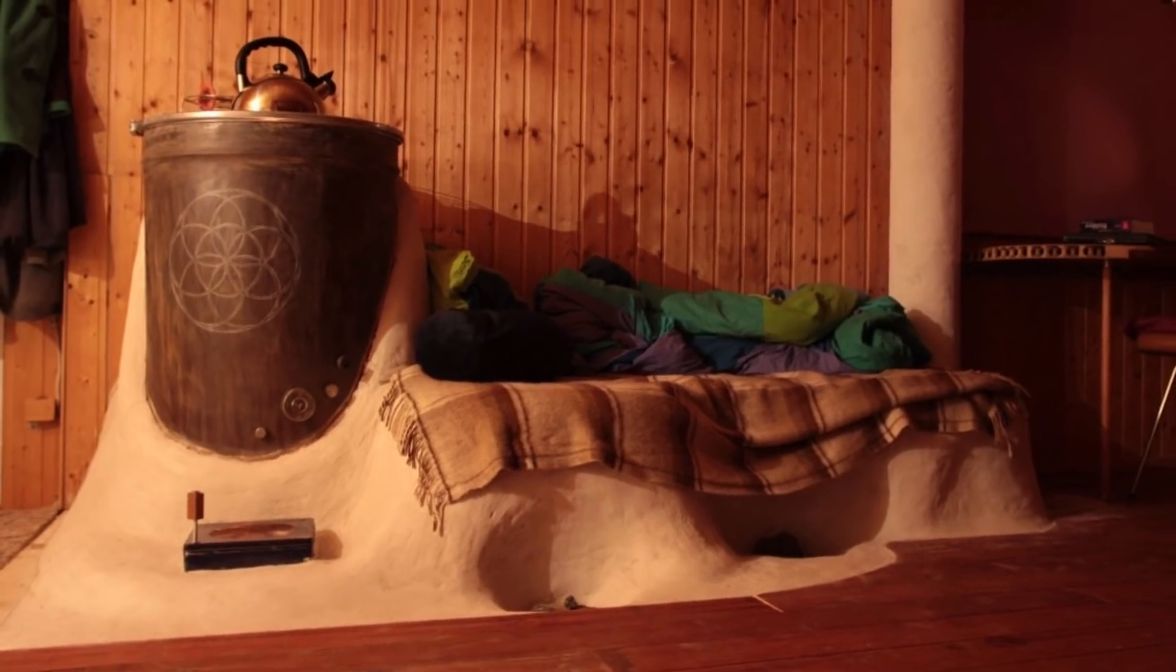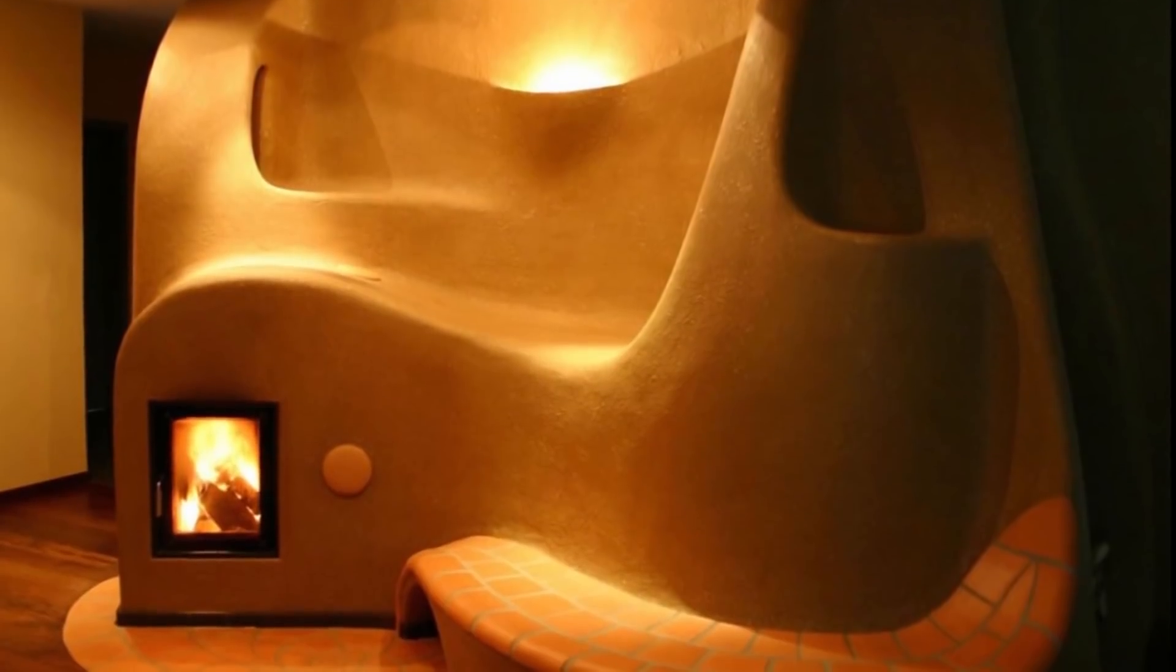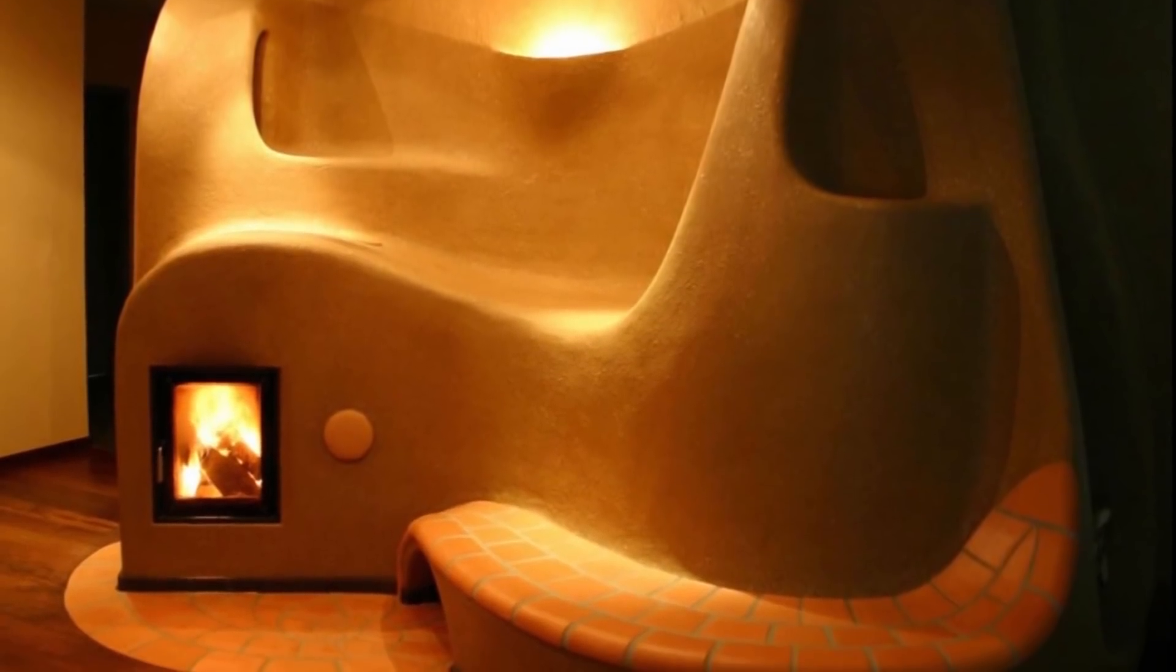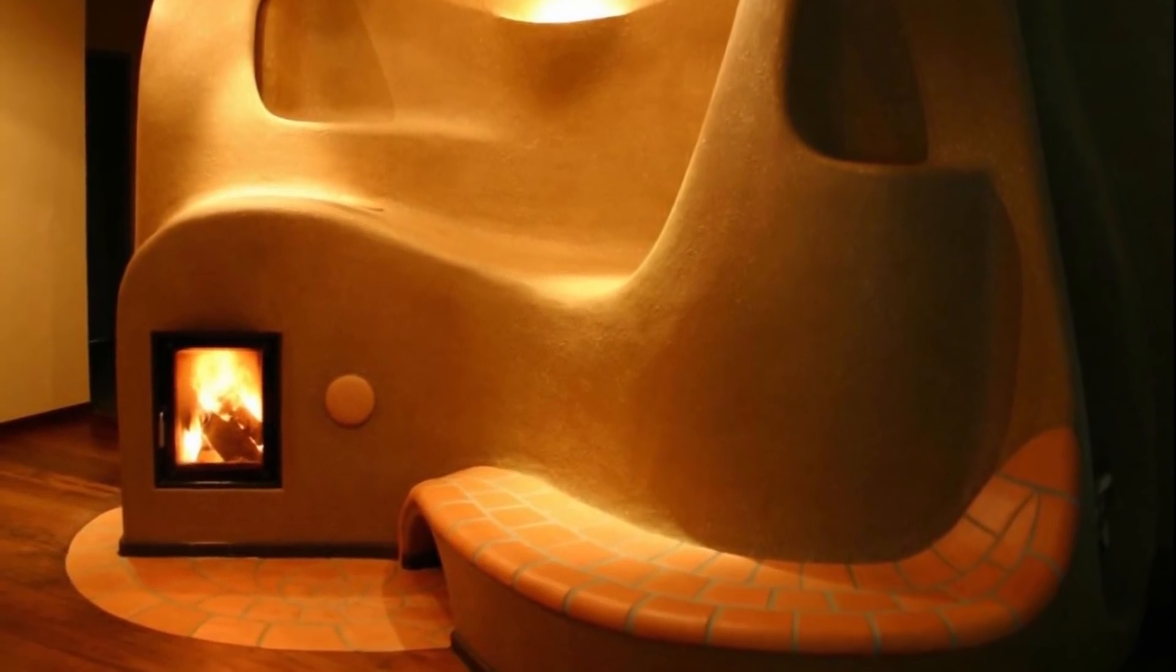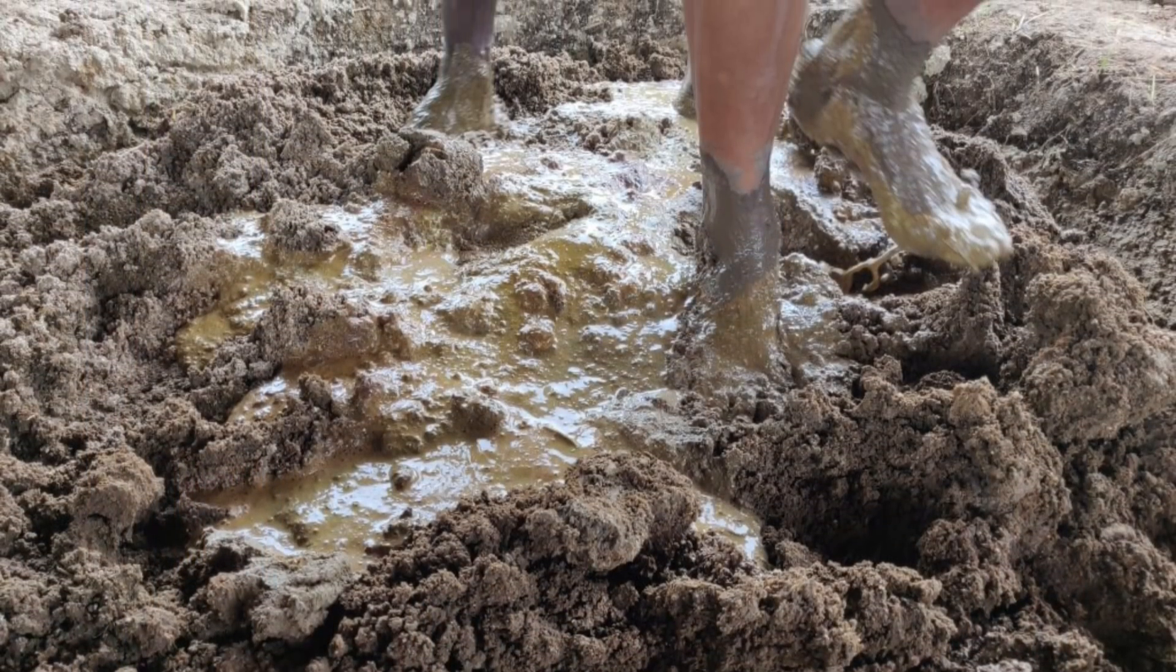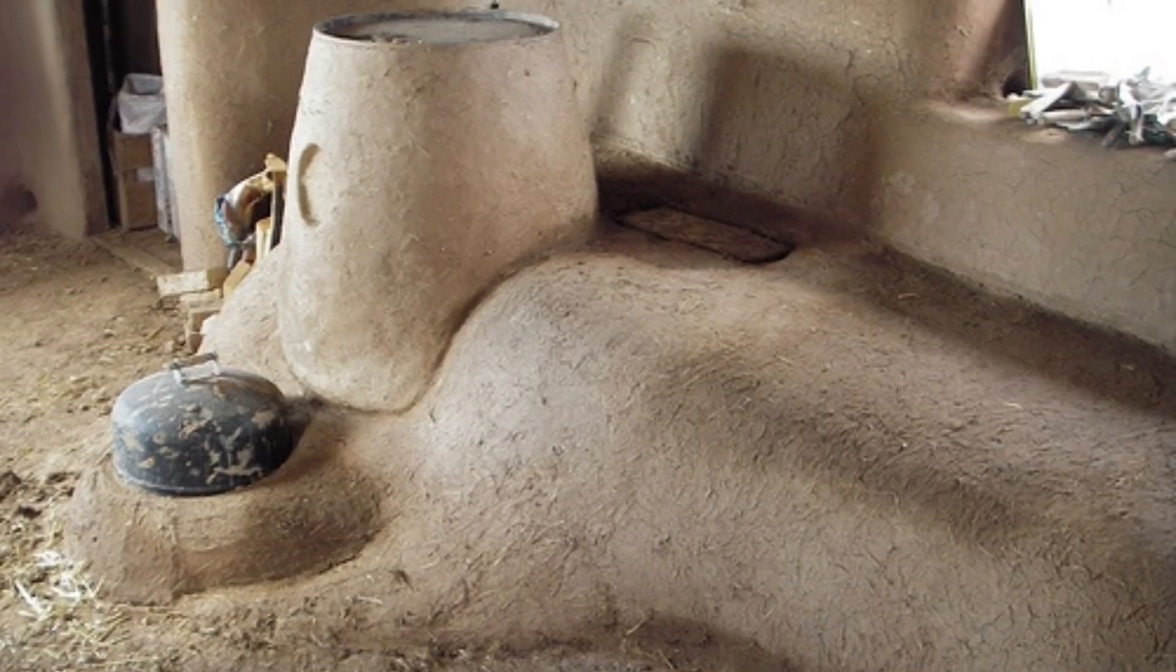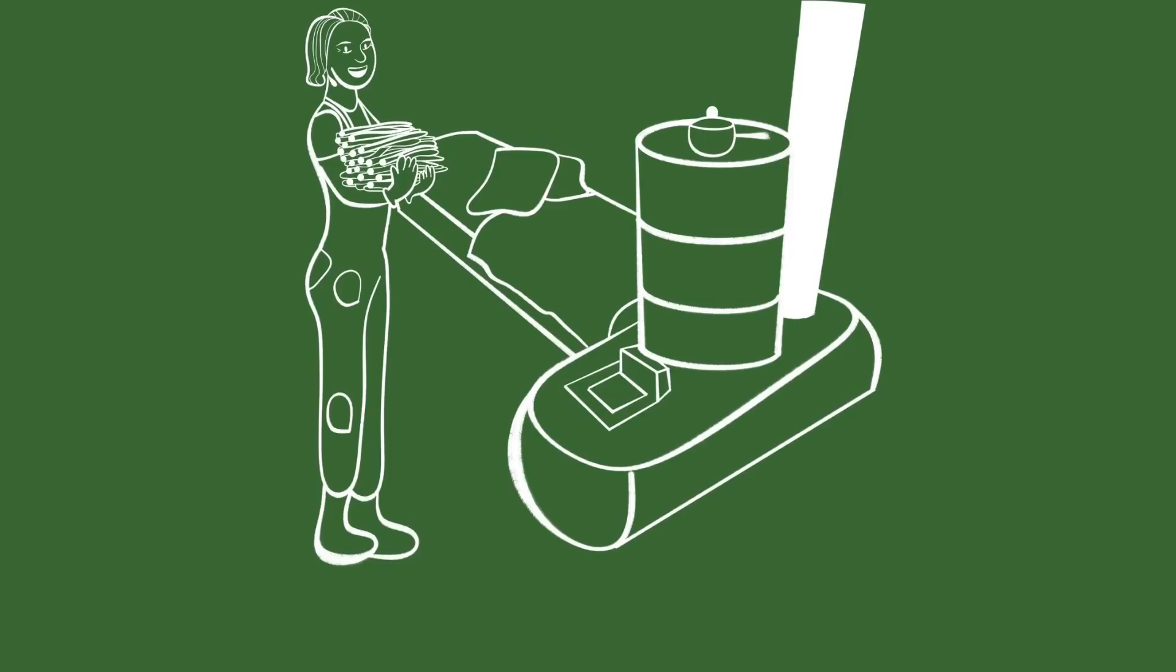Rocket mass heaters started entering homes about 10 years ago. We're discovering several optimizations every year for both first-world countries, making them more handsome, and for third-world countries, exploring ways to build them from materials found in the local landscapes. The amount of wood required to heat a home through an entire winter is so small, it could be collected from the branches and twigs that naturally fall from a few nearby trees.